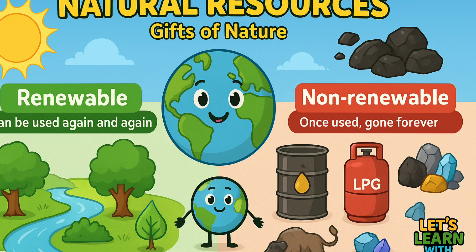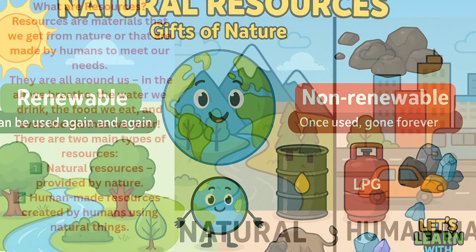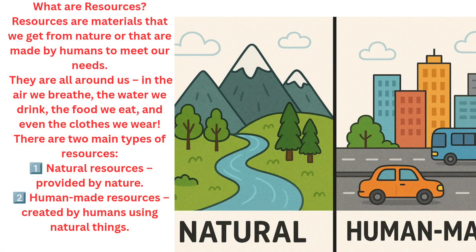Have you ever thought about the things we use every day, like water, air, sunlight, petrol for vehicles, and even the wood and furniture? Resources are materials that we get from nature or that are made by humans to meet our needs. They are all around us — in the air we breathe, the water we drink, the food we eat, and even the clothes we wear.